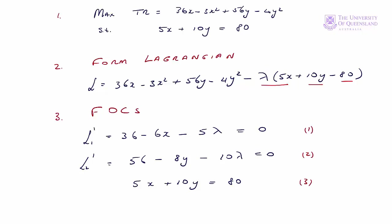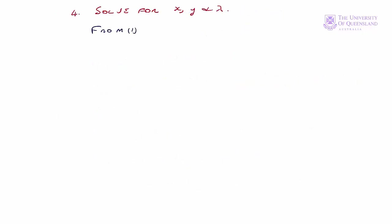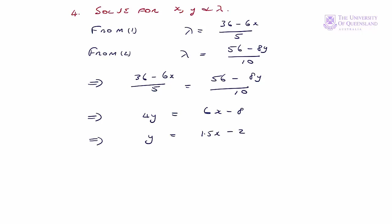Step four is to solve for x, y, and lambda. From equation 1 we solve for lambda in terms of x: lambda equals (36 minus 6x) divided by 5. From equation 2 we solve for lambda again: lambda equals (56 minus 8y) divided by 10. Since both right hand sides equal lambda, they're equal to each other, which implies y equals 1.5x minus 2. We'll call that equation 4.